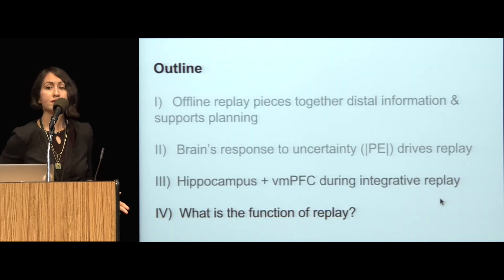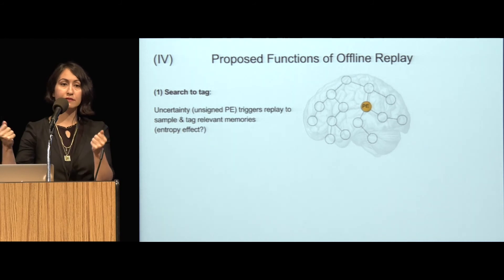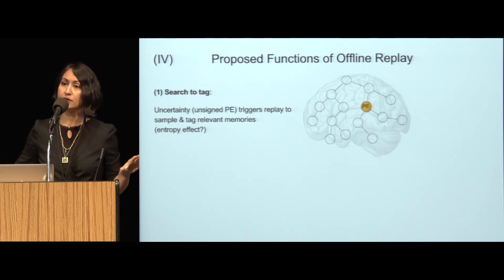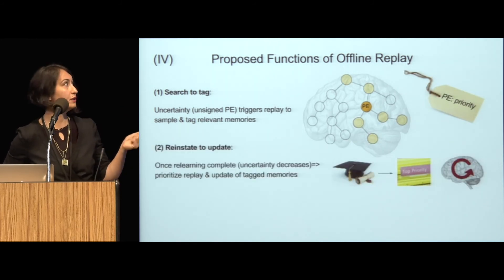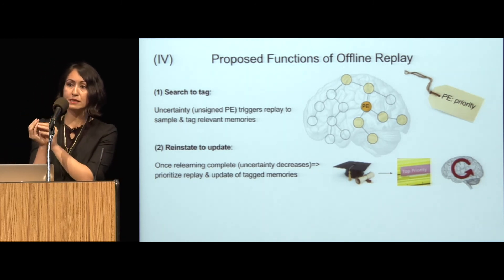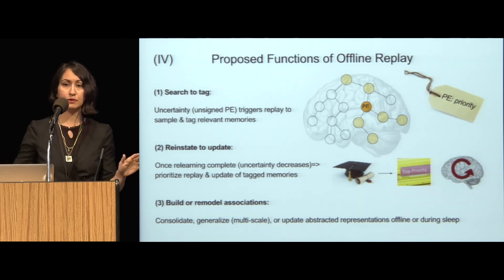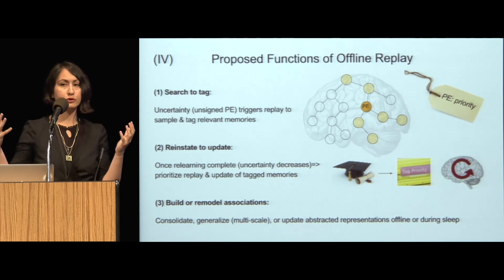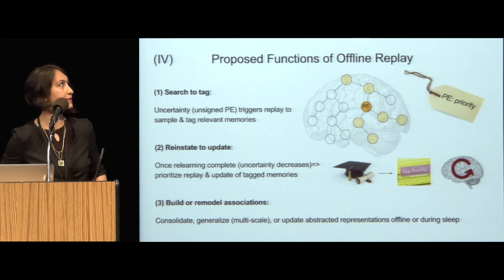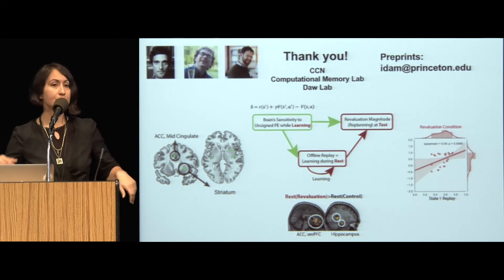Our main two hypotheses were that offline replay would support planning, and that memories tagged with uncertainty or prediction error might be replayed more and support this relationship. To give an integrative summary: we find that the extent to which the striatum and the cingulate are responsive to prediction errors during the learning and relearning phase predicts the extent of offline replay. There seems to be evidence for memory and updating processes during these rest periods, and the extent of this replay also predicts revaluation behavior. Finally, what is the function of replay? You experience an event, it has some surprise, you look at all other events related to this, and tag them with priority due to uncertainty to be replayed later. Once you learn the new contingencies, you can replay and update associated information. During sleep and waking rest, you can generalize over multiple scales, update your abstractions and representations. We're doing more simulations and modeling work with spread of activation — ask me about it afterwards. Thank you CCN, my collaborators, the Computational Memory Lab, and for your attention. Shoot me an email if you want the preprint.